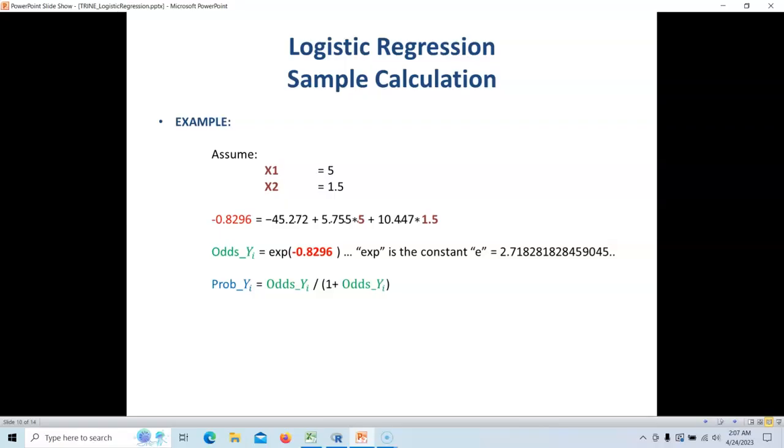It goes on forever. It's non-repeating. It never ends, and the first bunch of digits are 2.1828, 1828, 459045, and we're going to take this number to the negative 0.82 power. So, let's do that, and when we do that, we end up with a number 0.4376.